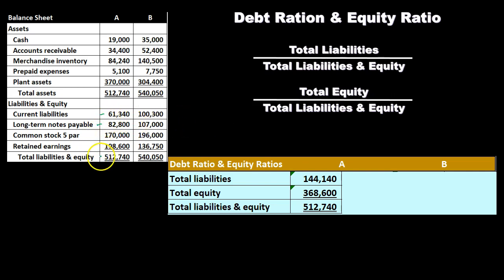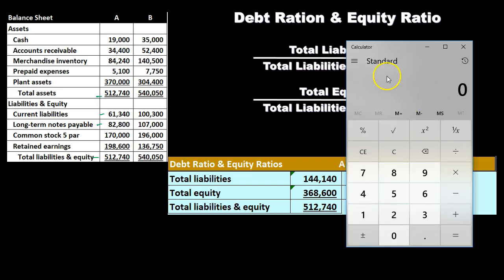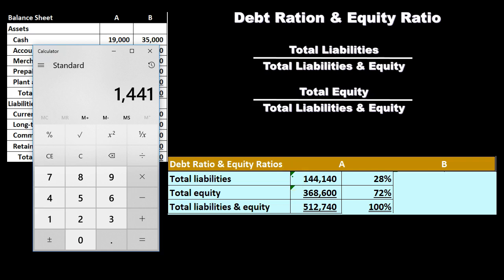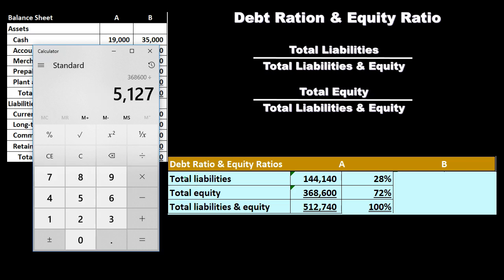Adding liabilities and equity together gives us 512,740 — the total bottom line of the balance sheet, equivalent to total assets. We then compare each component to the total: 144,140 divided by 512,740 gives us 28 percent for the debt ratio, and 368,600 divided by 512,740 gives us 72 percent for the equity ratio. Those two add up to 100 percent.